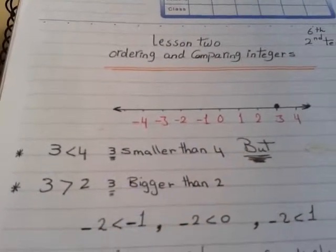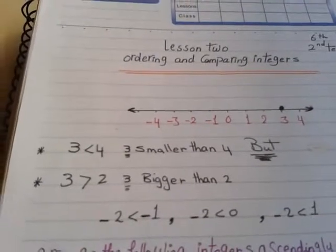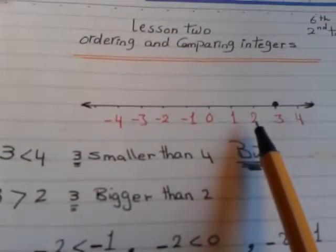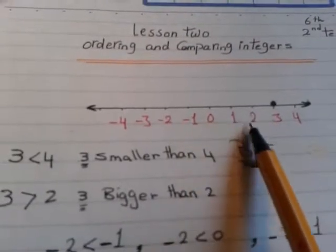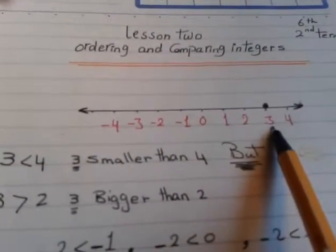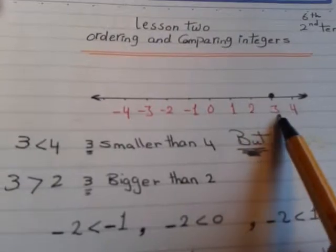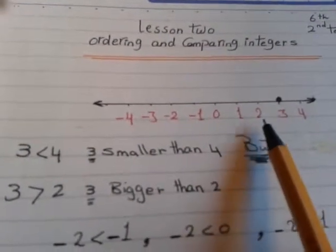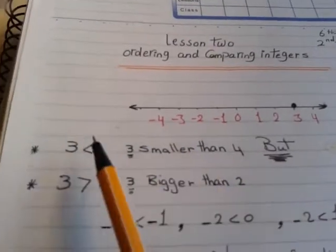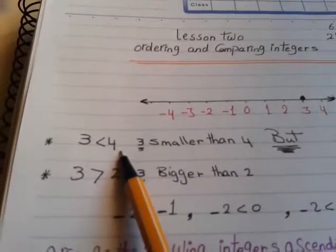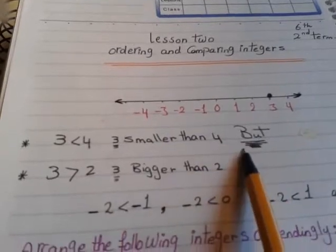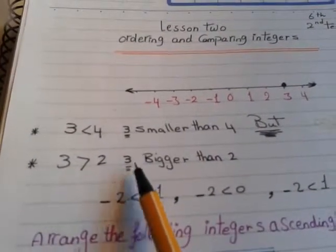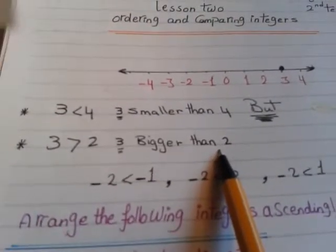All of us know that two is smaller than three, so two comes before three on the number line, and three is bigger than two, so three comes after two. Similarly, three is smaller than four, but three is bigger than two.